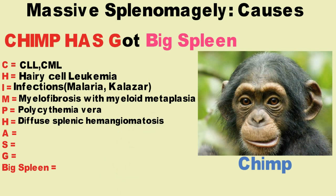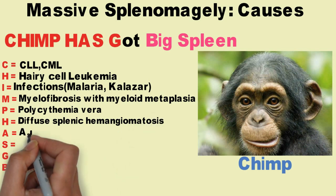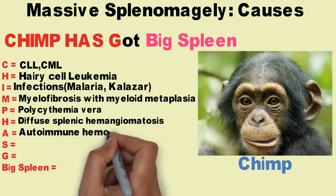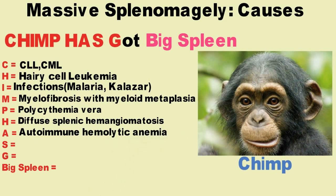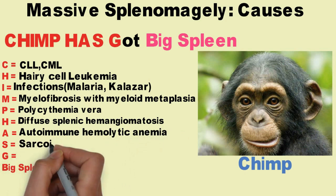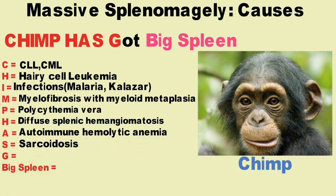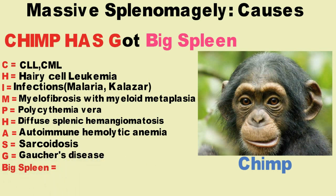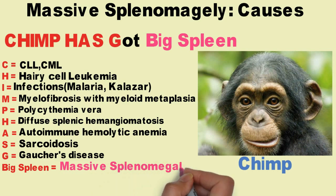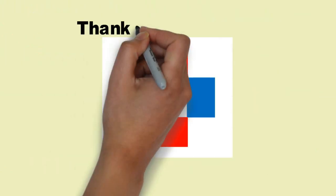A is for Autoimmune Hemolytic Anemia. S is for Sarcoidosis. G is for Gaucher's Disease. And 'Big Spleen' stands for Massive Splenomegaly. Thanks for watching.